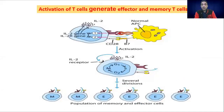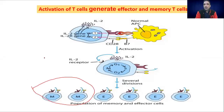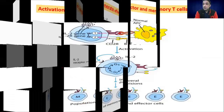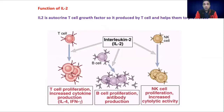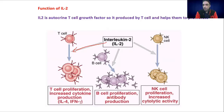Once the cells get activated, they activate the cell cycle, producing effector cells of different types along with memory cells, which survive within our bodies and help to combat the same pathogen again. Interleukin-2 is a very major player in the activation of our immune system — it not only activates and supports the proliferation of T cells into CD4 and CD8 cells, but can also help to activate natural killer cells.